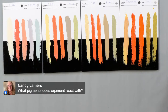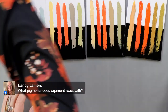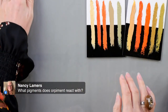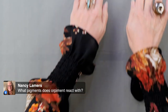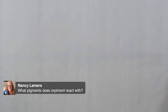Nancy asks what pigments does orpiment react with. In literature it's said to react with lead white and with copper-based pigments. We're going to be testing that to be sure, because not everything in old literature is correct — we're going to determine whether it can be used with lead white or not.